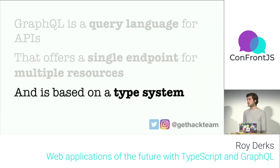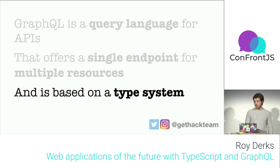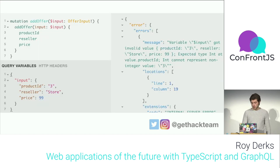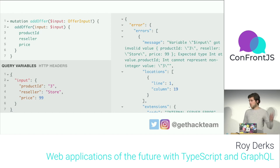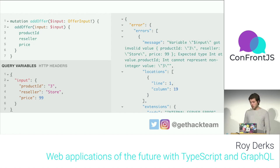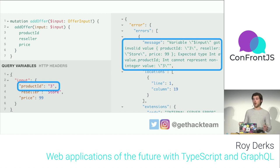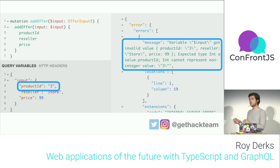Most importantly, GraphQL is based on a type system. If you try to send a mutation with variables that don't match the defined types, you get an error — because you're breaking the rules of the GraphQL type system. That's why a type system is important for GraphQL: it forces your users to use the types you've defined in your schema.